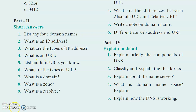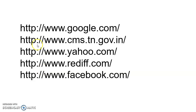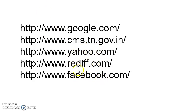List four example URLs. Examples include: www.google.com, cms.dn.gov.in, yahoo.com, rezip.com, facebook.com. You can write any four of these as valid URL examples.